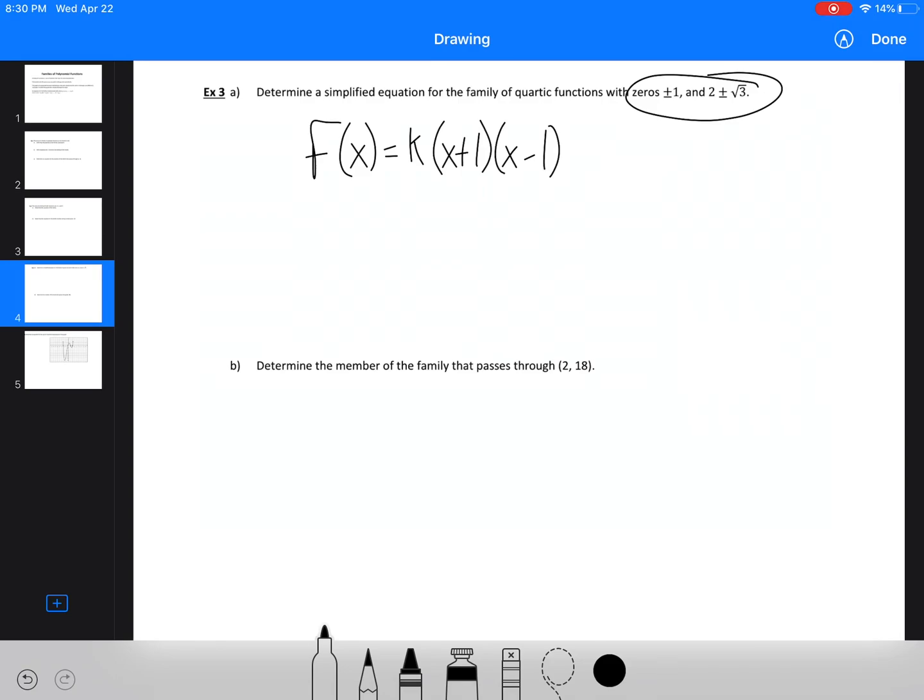Now the next one, we've got 2 plus root 3 and 2 minus root 3. So those are two separate equations. x, but we always have a positive 2. So we've got (x minus 2 plus root 3) and (x minus 2 minus root 3).